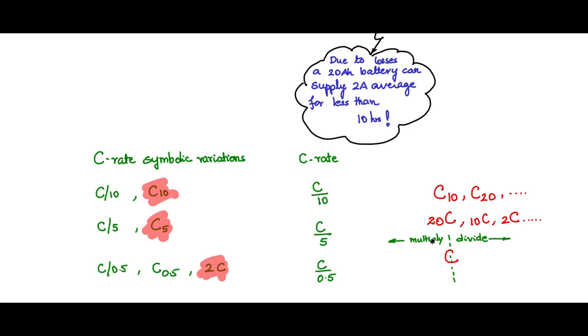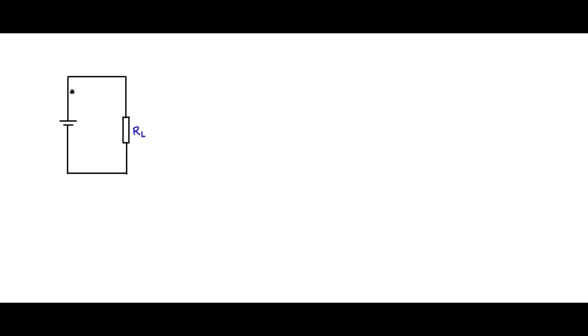The C-rate is a quite important parameter to be considered, especially when you are sizing the battery. Consider a simple battery circuit — a battery connected to a load RL. Let us mark ID as the discharge current flowing out of the battery and into the load in the direction as shown.